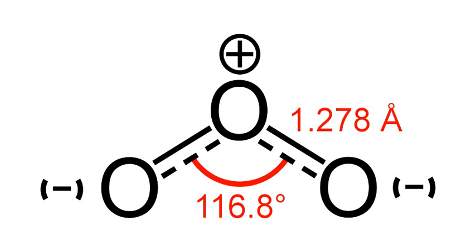Ozone's odor is reminiscent of chlorine and detectable by many people at concentrations of as little as 0.1 ppm in air. Ozone's O3 structure was determined in 1865. The molecule was later proven to have a bent structure and to be diamagnetic.